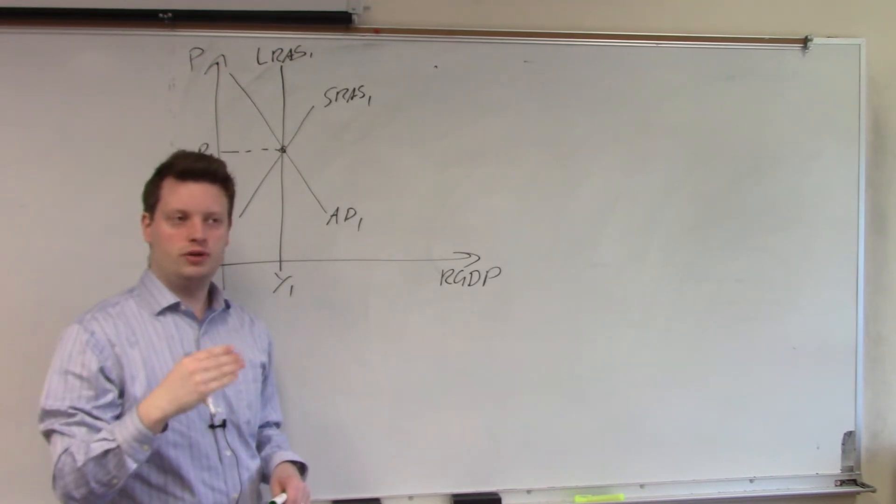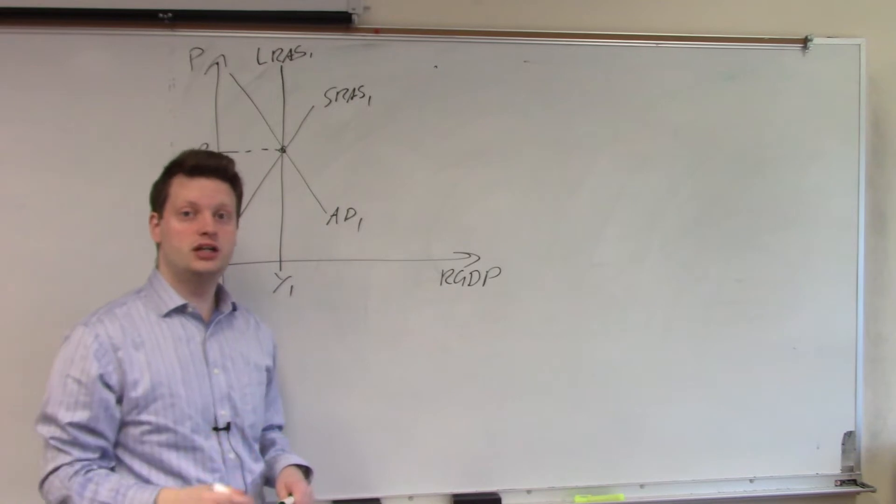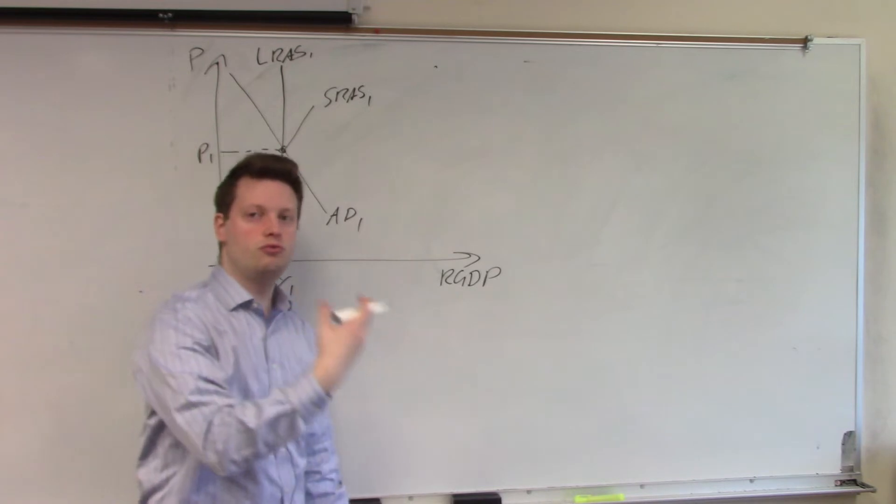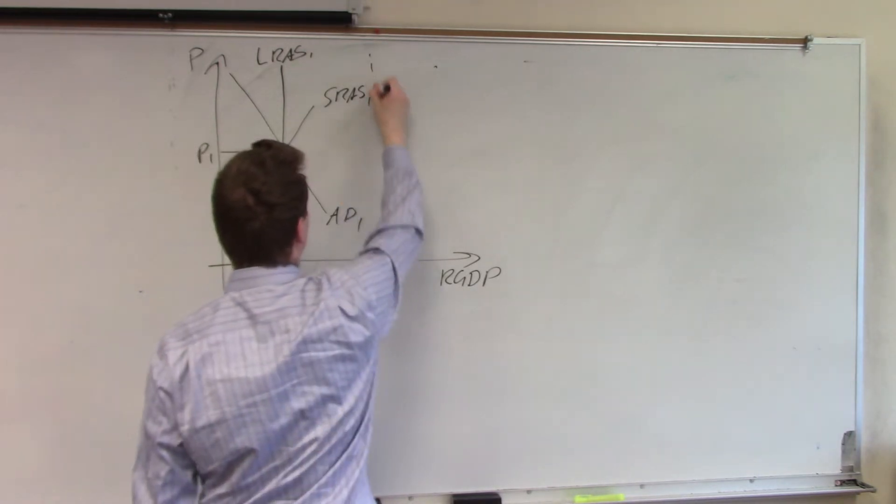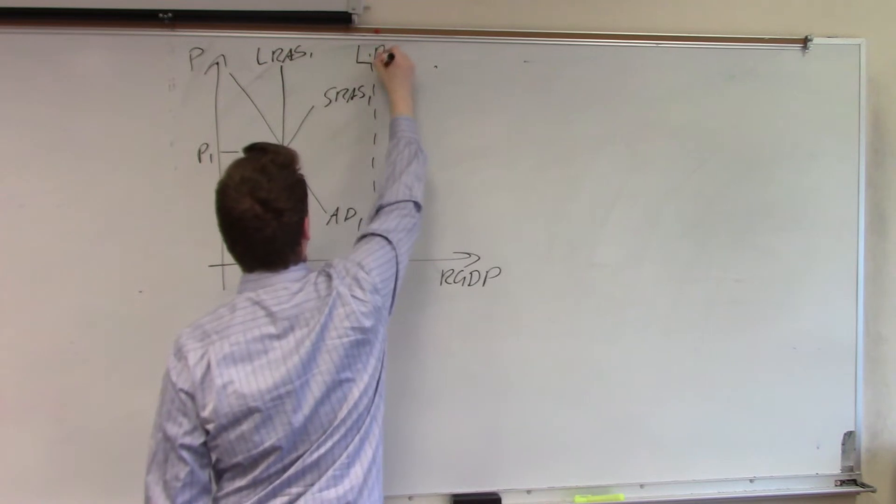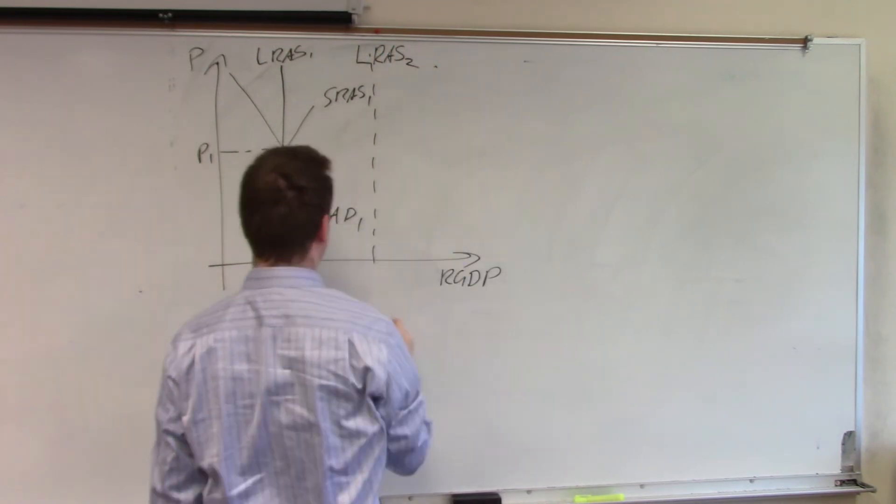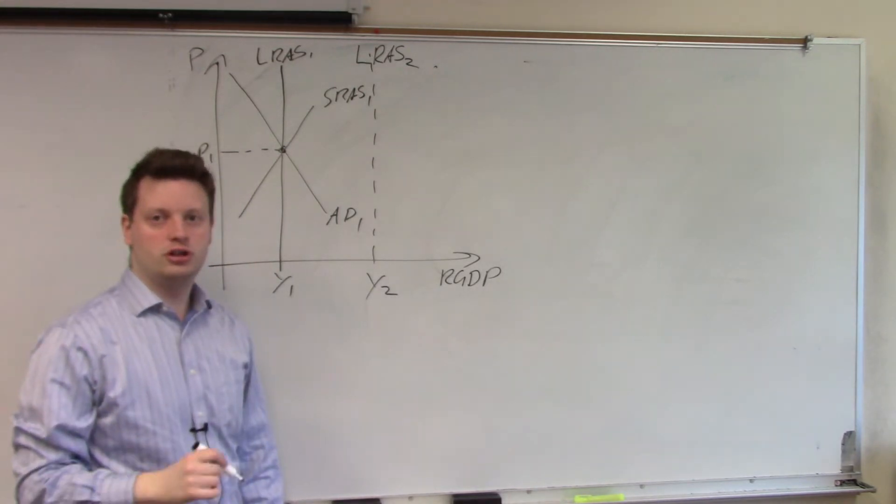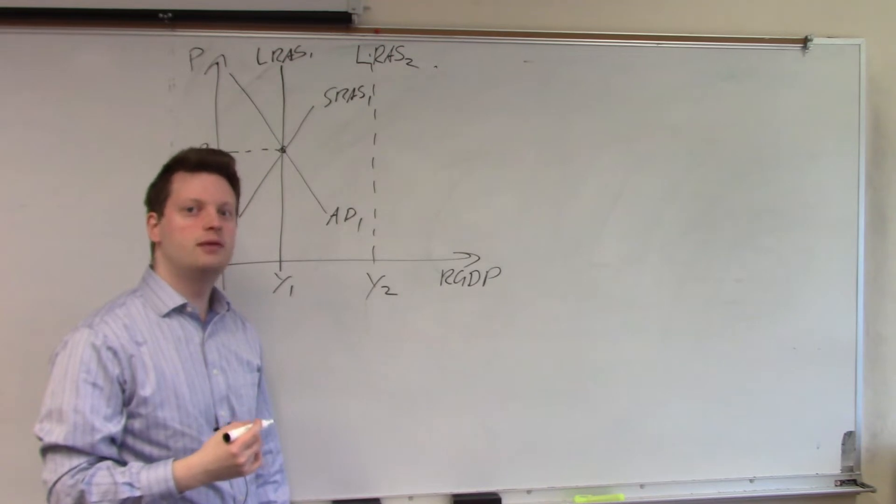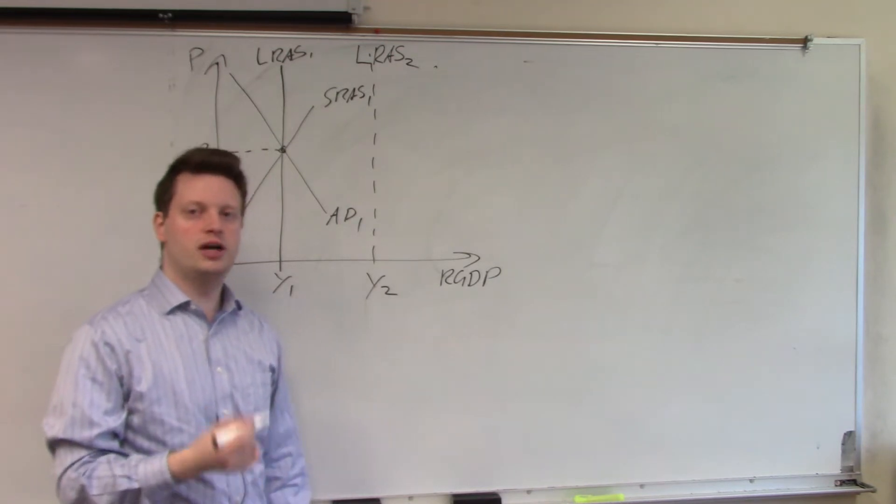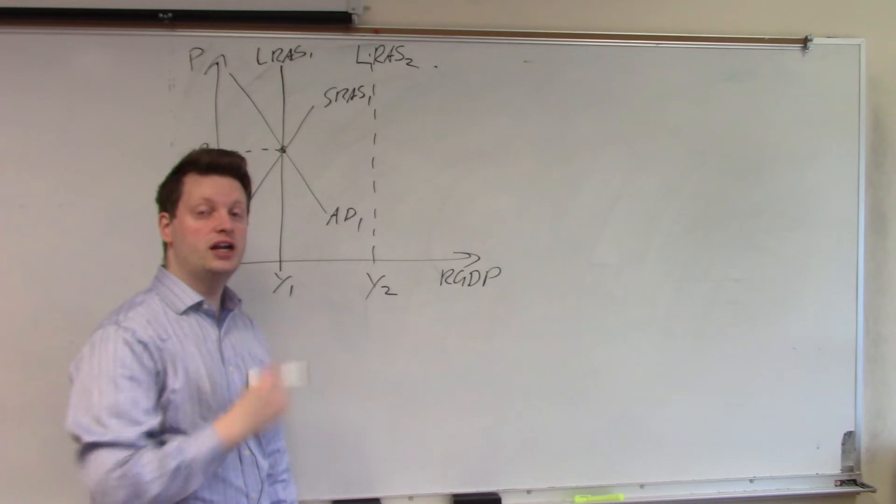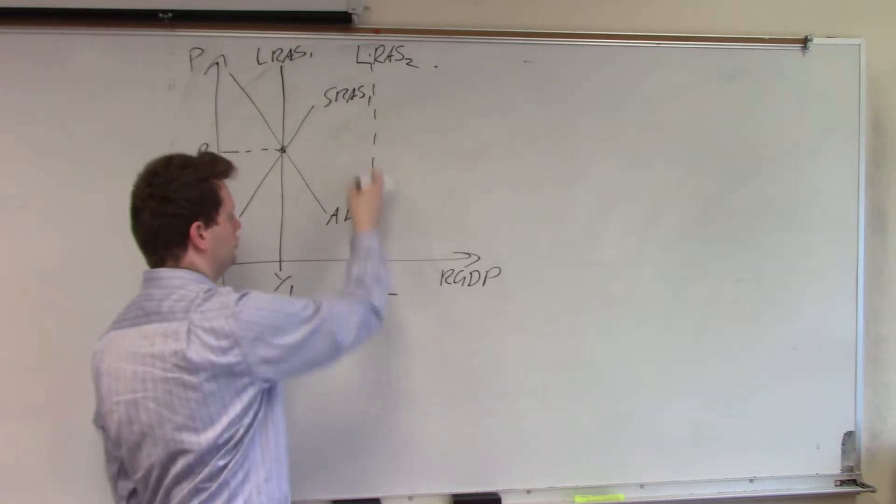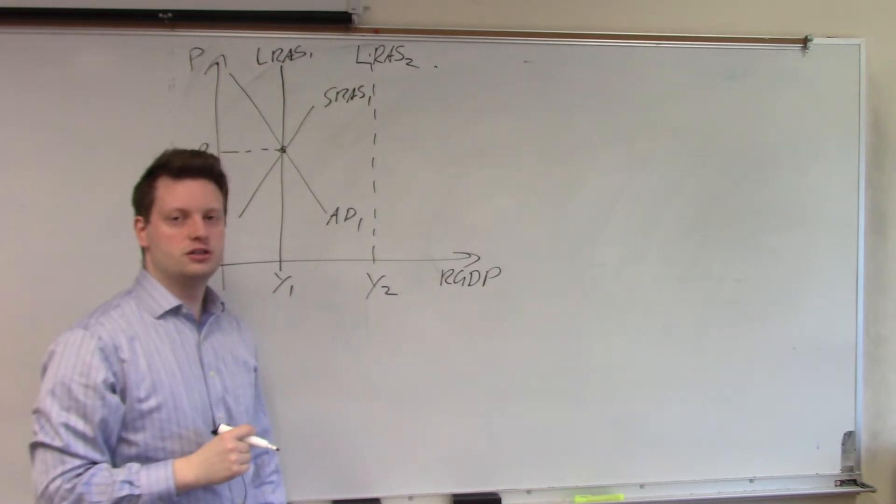Let's now assume we have a second year. In this second year, potential GDP or the long-run aggregate supply curve shifts to the right and we have a situation where you have the long-run aggregate supply curve 2 which will lead to a new potential output level of Y2. At the same time, let's assume the short-run aggregate supply and aggregate demand also both shift to the right. However, they don't shift all the way to the top of this new long-run aggregate supply curve.